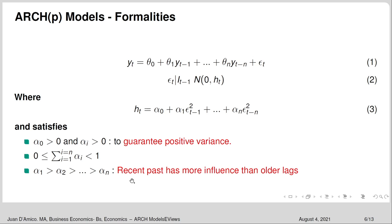The reason that the alphas must be decreasing is that the recent past has more influence than older lags. What happened yesterday will have more weight than what happened three, four, five, or six months ago. Recent information is going to have more weight than very old information.